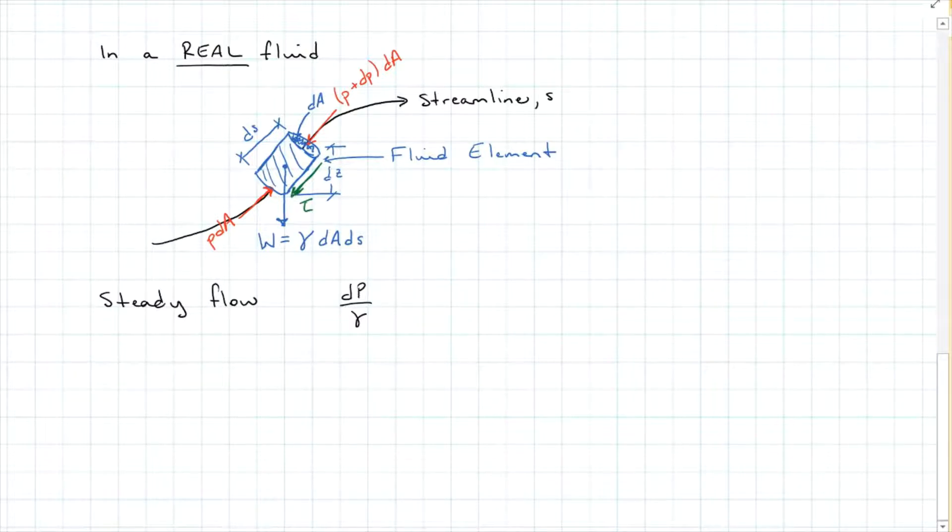We're going to have our change in pressure over the specific weight plus that change in height plus our velocity, and this is now going to work against those shear stresses. Here the P is for perimeter, and over here this one's pressure.